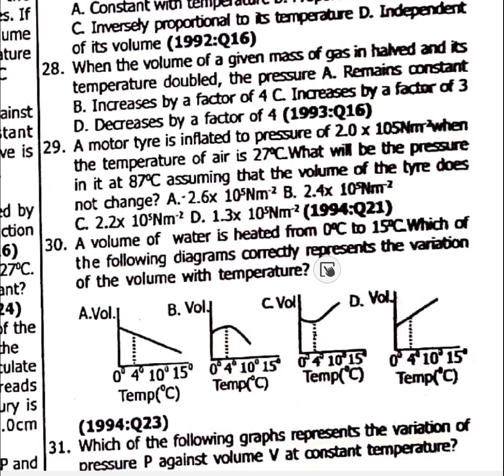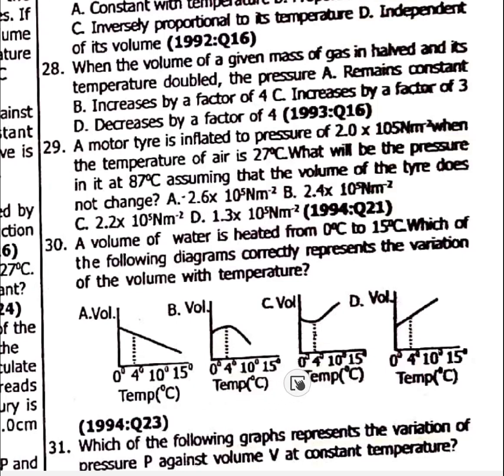Question 29 involves calculation. Question 30: A volume of water is heated from 0 to 15 degrees. Remember the anomalous behavior of water — the correct graph is option C.